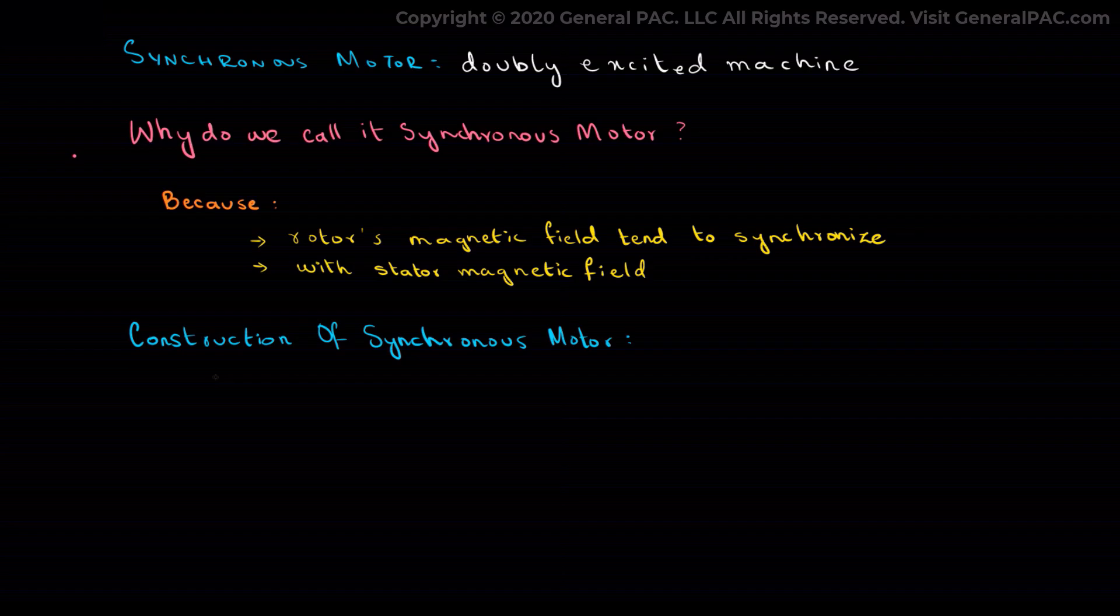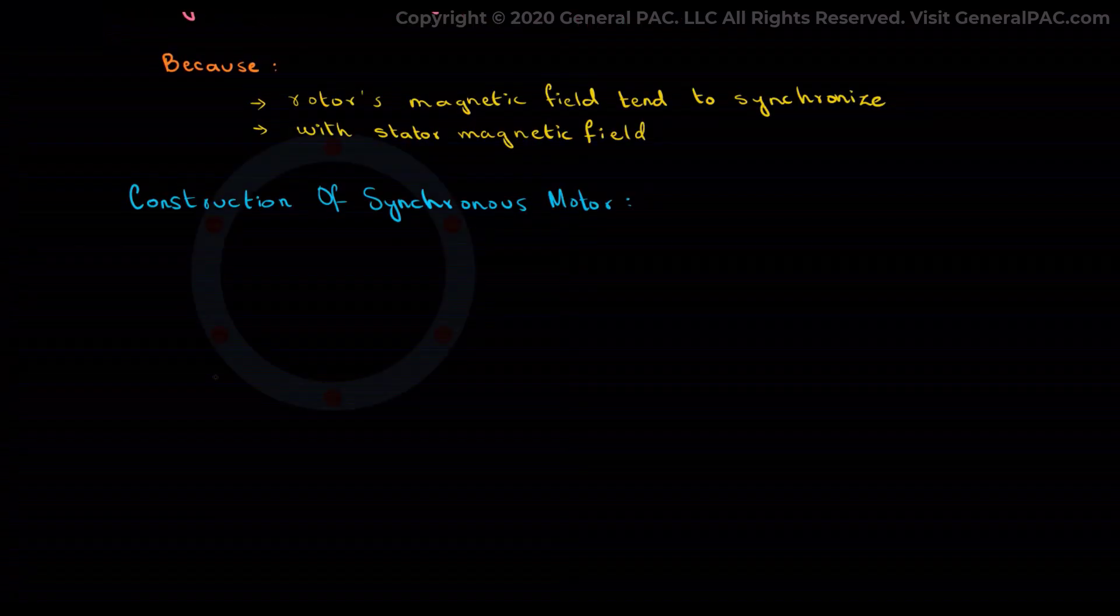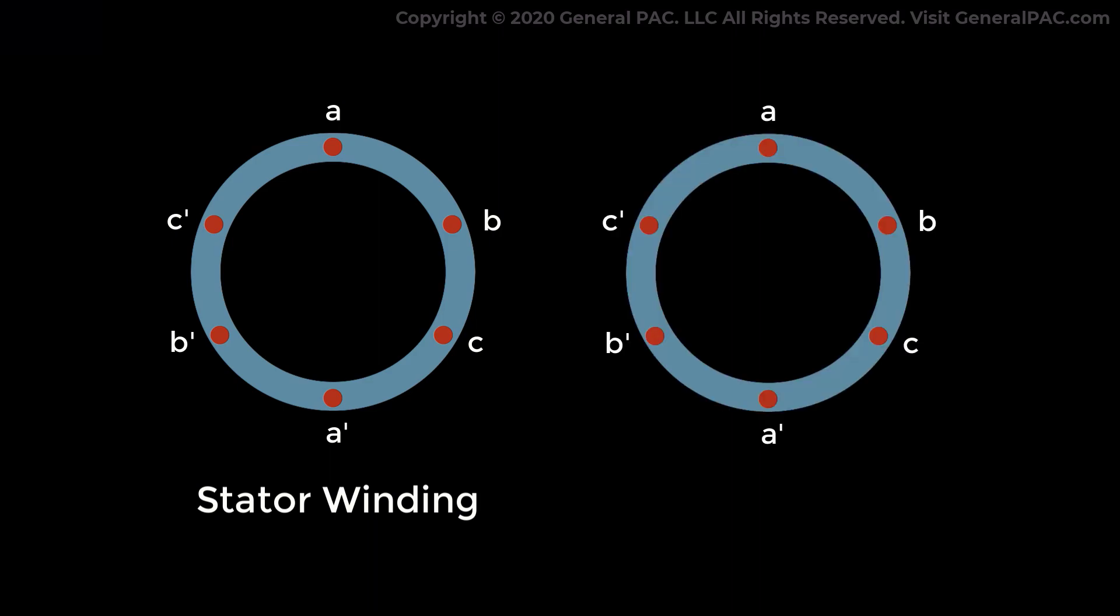Consider a two-pole synchronous motor having coils A, B, and C that are electrically separated with an angle of 120 degrees. This is the stator winding of the synchronous motor. Other than the stator, we have a field or rotor connected with the DC supply.